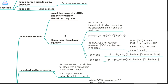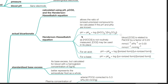The Henderson-Hasselbalch equation allows the ratio of ionized to unionized compound to be calculated if the pH and pKa are known. The formula is: pH equals pKa plus log of concentration of HCO3 divided by concentration of H2CO3. As the concentration of H2CO3 is not routinely measured, CO2 concentration may be used in its place.